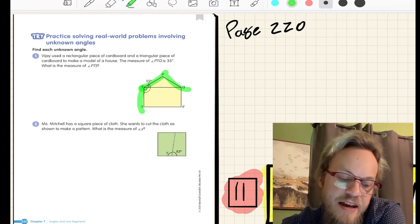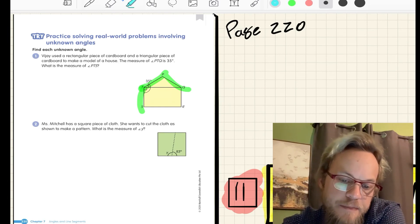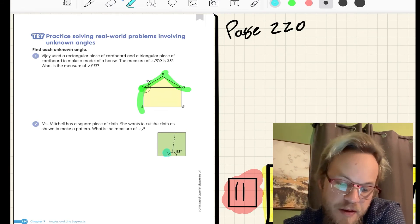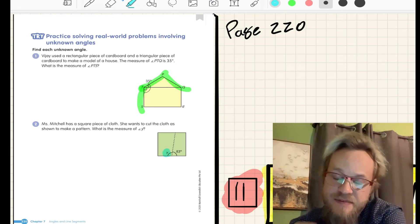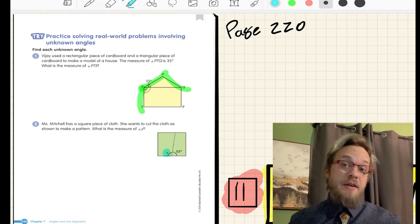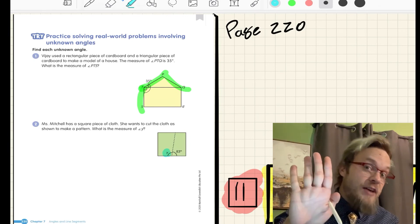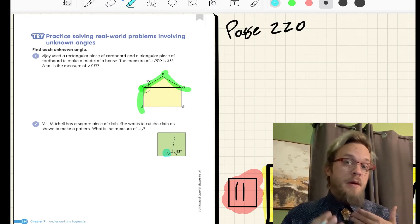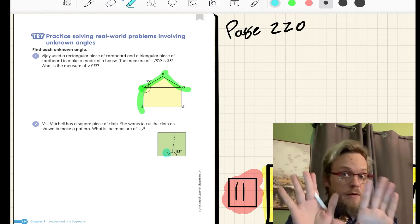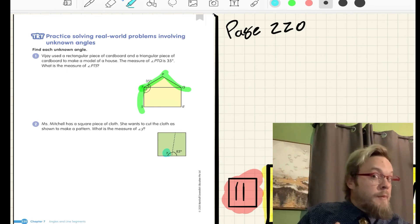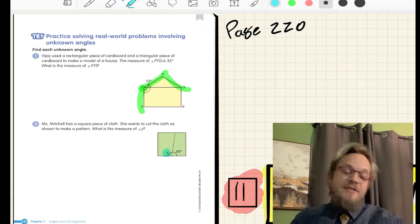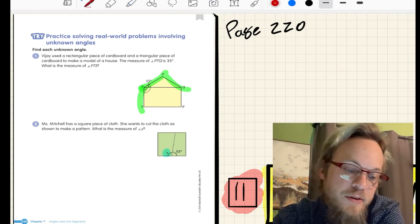Problem number two. Miss Mitchell has a square piece of cloth. She wants to cut as shown to make the pattern. What is the measure of angle Y? I'm going to give you a moment to pause the video. Work through this. All right. Thank you for pausing that video and working through this.